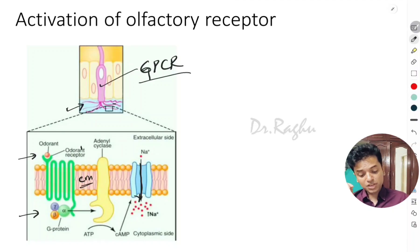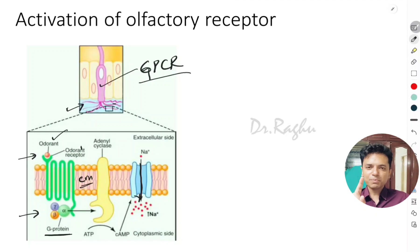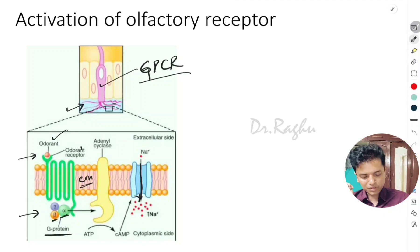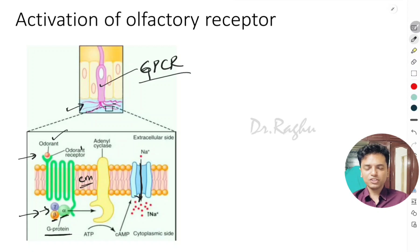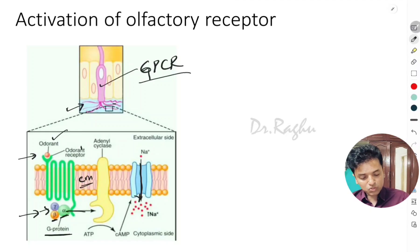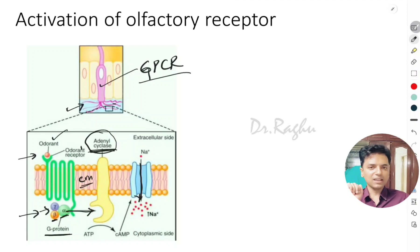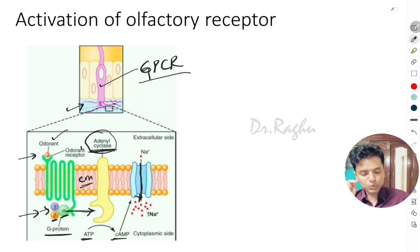The extracellular domain attaches to the odorant, and the intracellular domain is attached to the G-protein. This G-protein is a trimeric protein consisting of three subunits: the alpha subunit, the beta subunit, and the gamma subunit. Once the odorant attaches to the extracellular domain, the alpha subunit dissociates from the beta and gamma subunits and activates the enzyme adenyl cyclase, which is also present in the cell membrane.